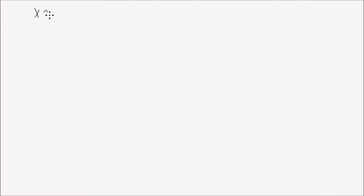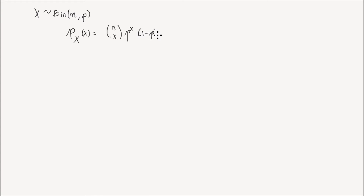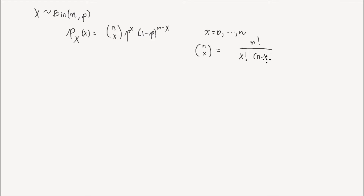In the first part of lesson number 16, which was the last video, we looked at a random variable x that follows a binomial distribution with the number of trials n and the probability of success p. It has a PMF or probability mass function p of x equals n choose x times p to the power of x times 1 minus p to the power of n minus x, for x ranging from 0 to n. We know that n choose x is n factorial divided by x factorial times n minus x factorial.